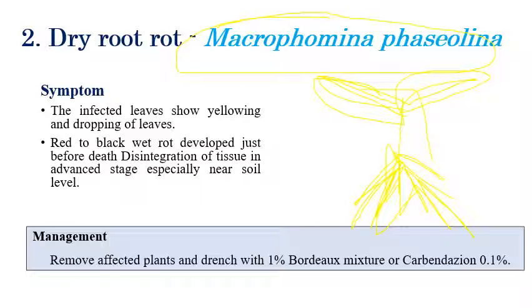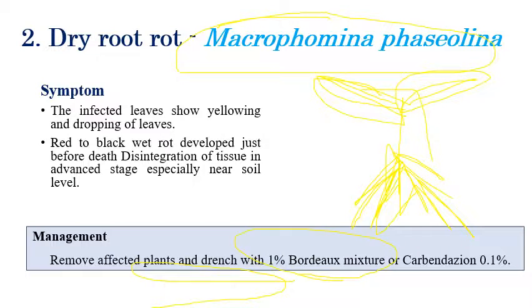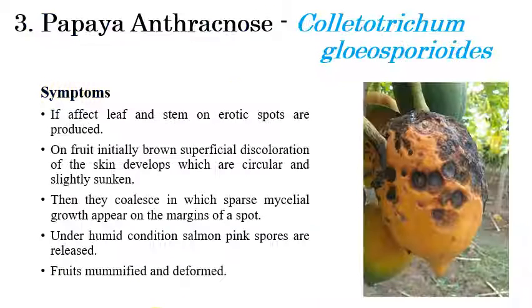Coming to the management of dry root rot: remove the affected plants and drench the soil with 1% Bordeaux mixture or 0.1% Carbendazim, which can give relief.